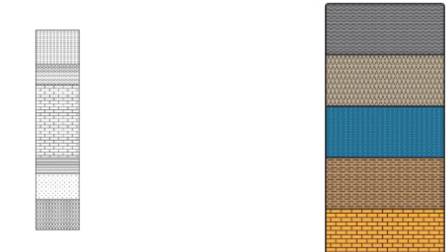Another important approach is biostratigraphic correlation, which relies on the presence of index fossils — organisms that existed for a relatively short period of time but were widespread and abundant. By identifying these fossils in different rock layers, scientists can infer that those layers were deposited during the same geological time period.